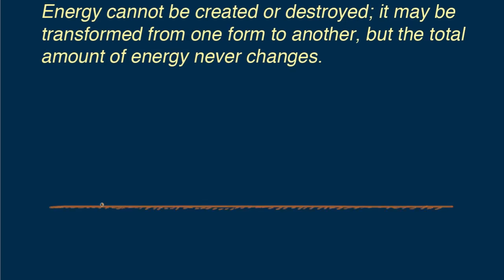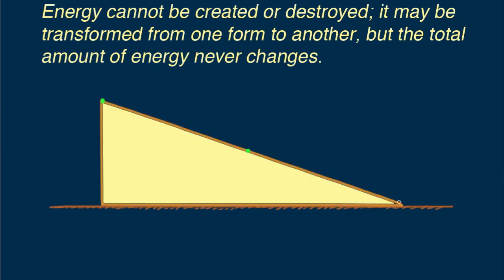As an example, consider the energy states of a block of ice sliding down an inclined plane. We start by doing a hundred joules of work to lift the block from the floor to the top of the incline.